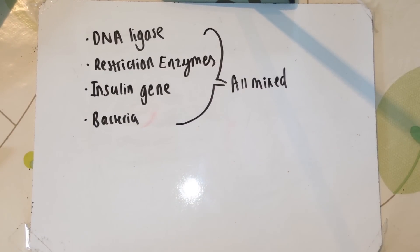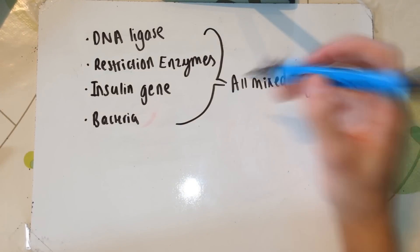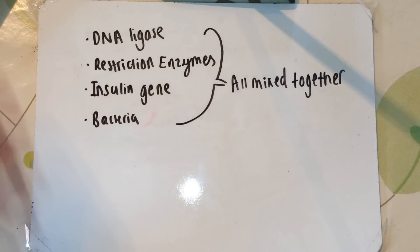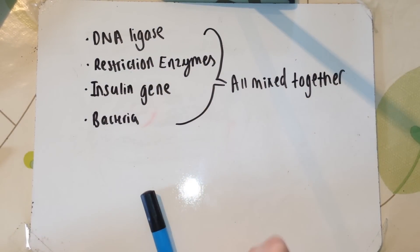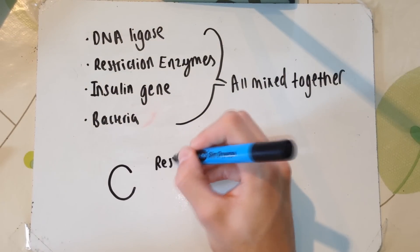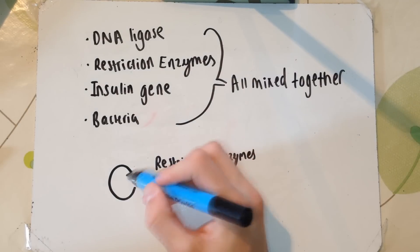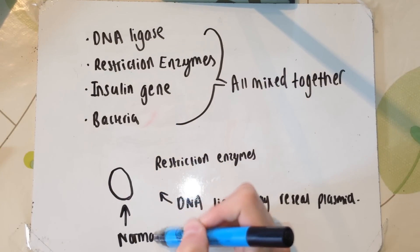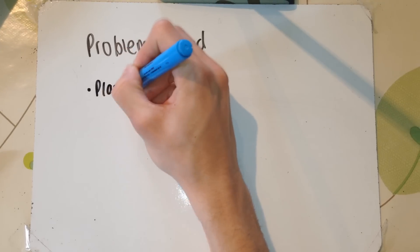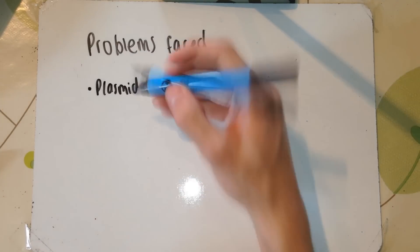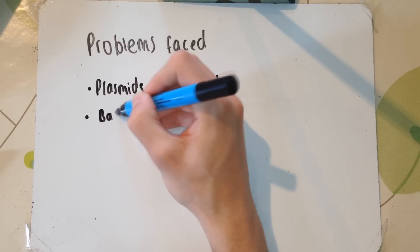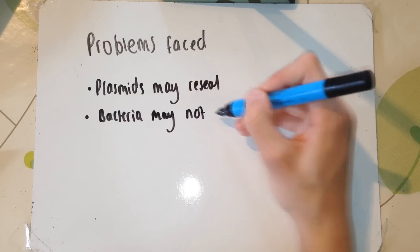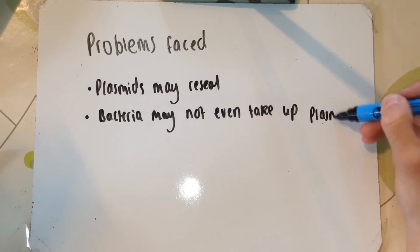The problem here is that the restriction enzymes have created sticky ends of the plasmid complementary to each other, ready to let the insulin gene in. However, DNA ligase may act upon the plasmid and instantaneously reseal it before the insulin gene is inserted. So in the population of plasmids, you're going to have some that have the gene you want and some without. There are two problems to overcome: the plasmids may reseal before the insulin gene is inserted, or even if the insulin gene is successfully inserted, the bacteria may not take up the plasmid anyway — meaning we still don't have bacteria to produce insulin.